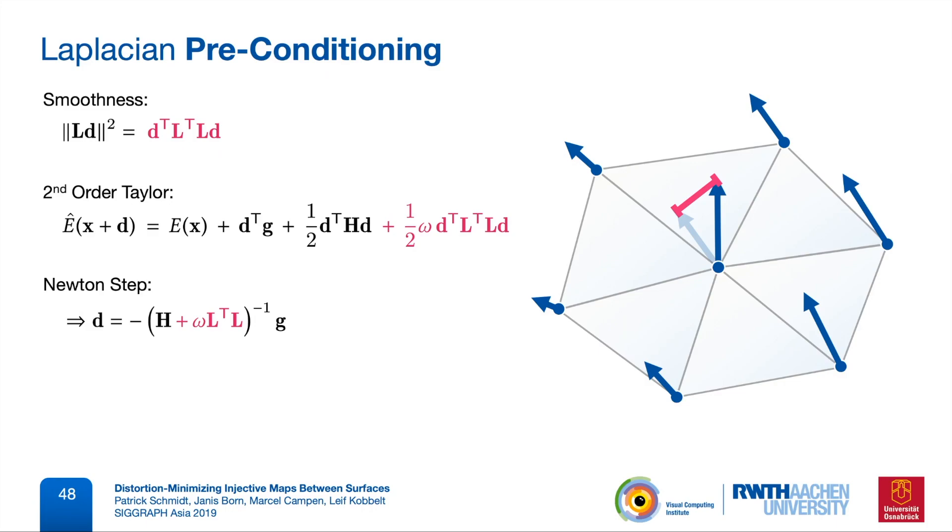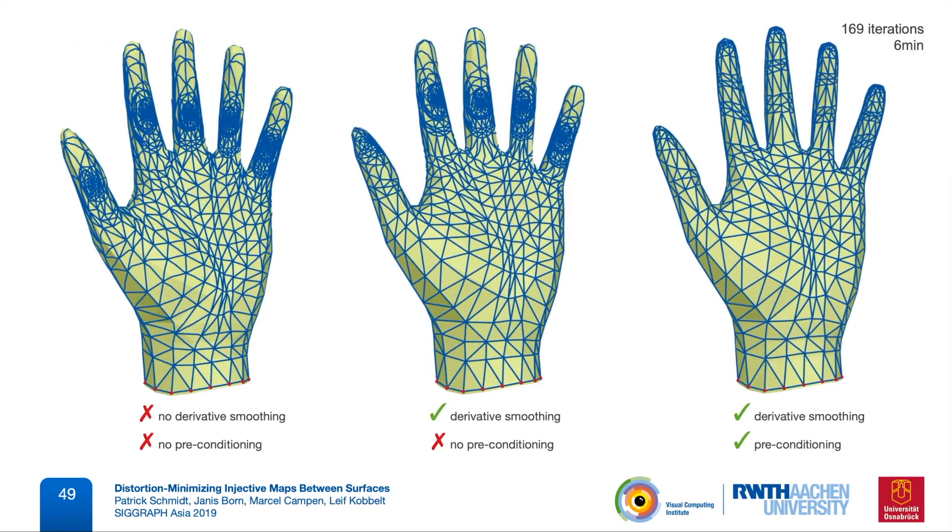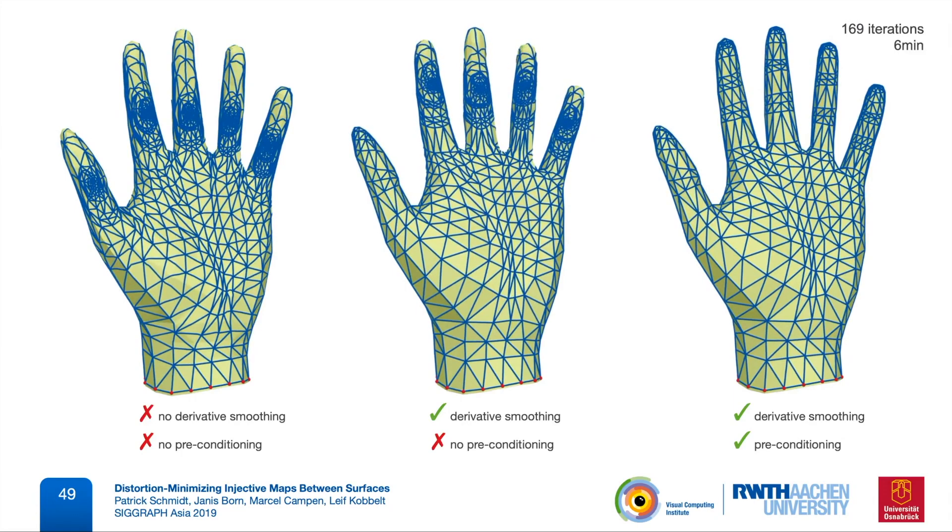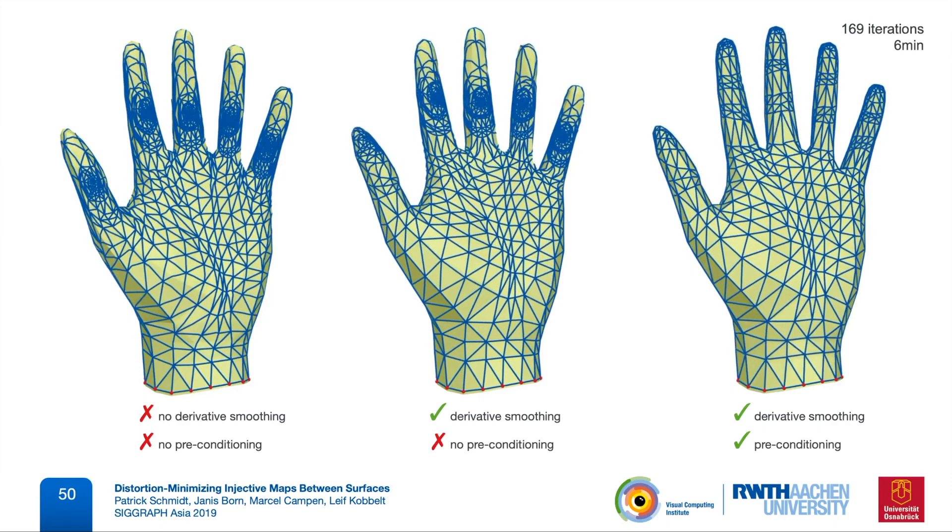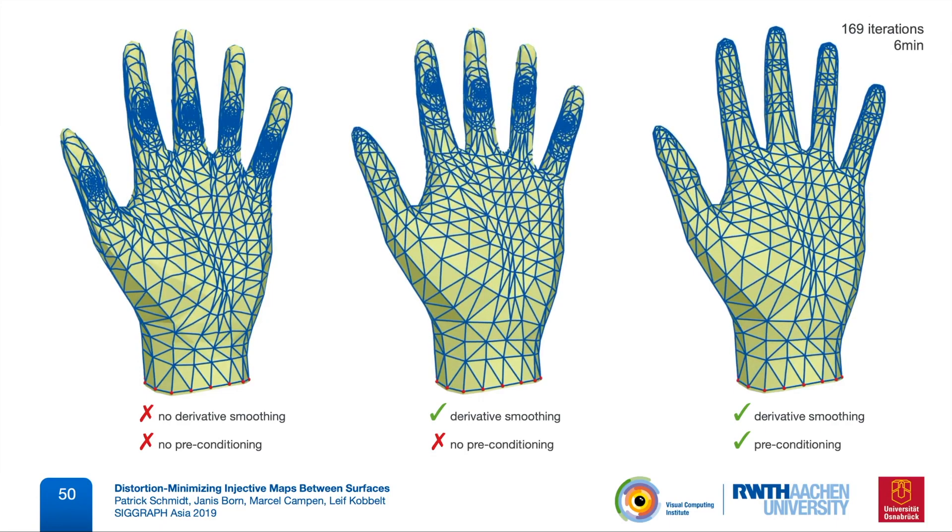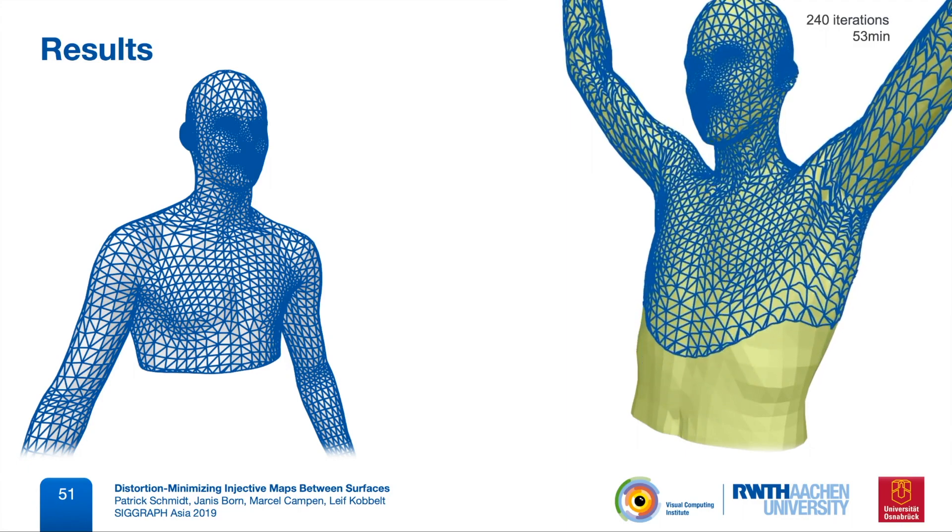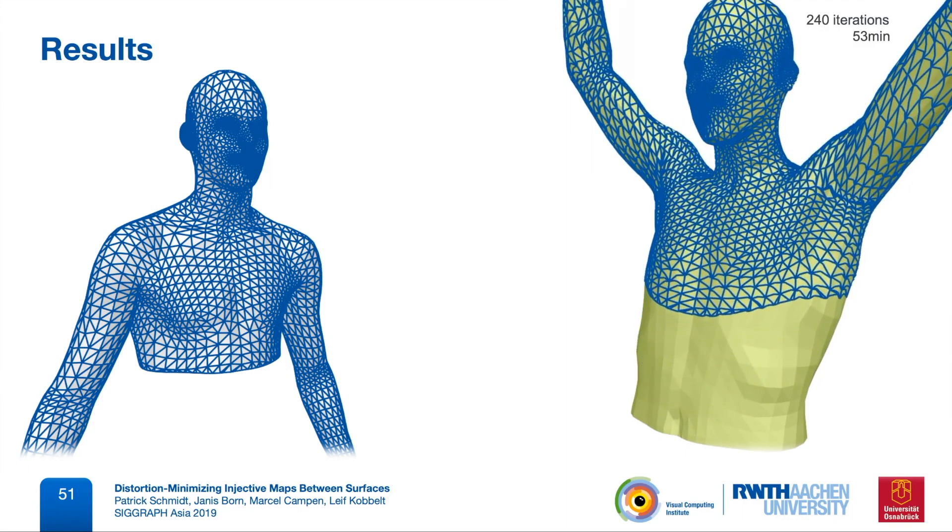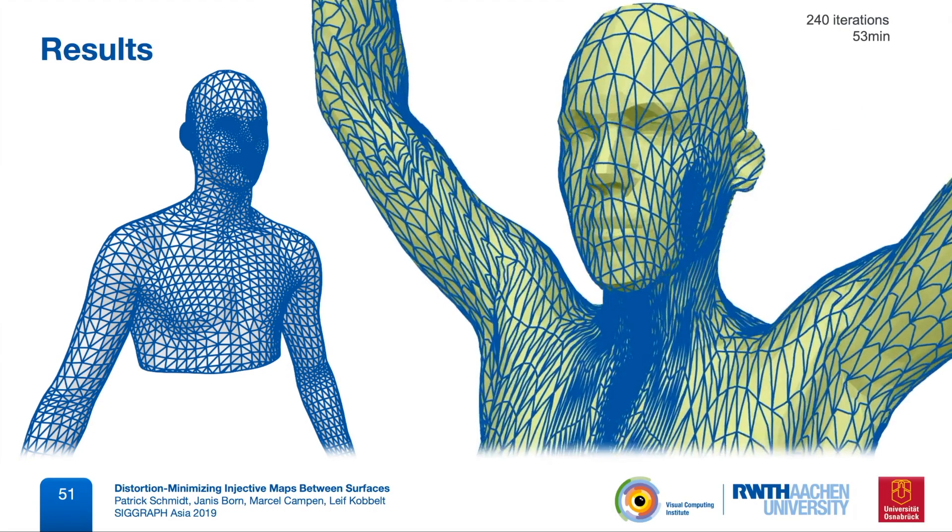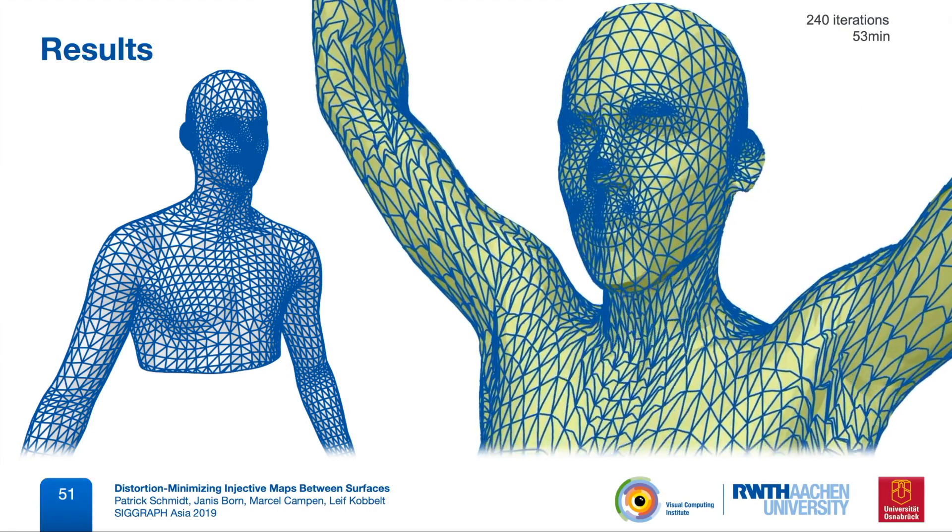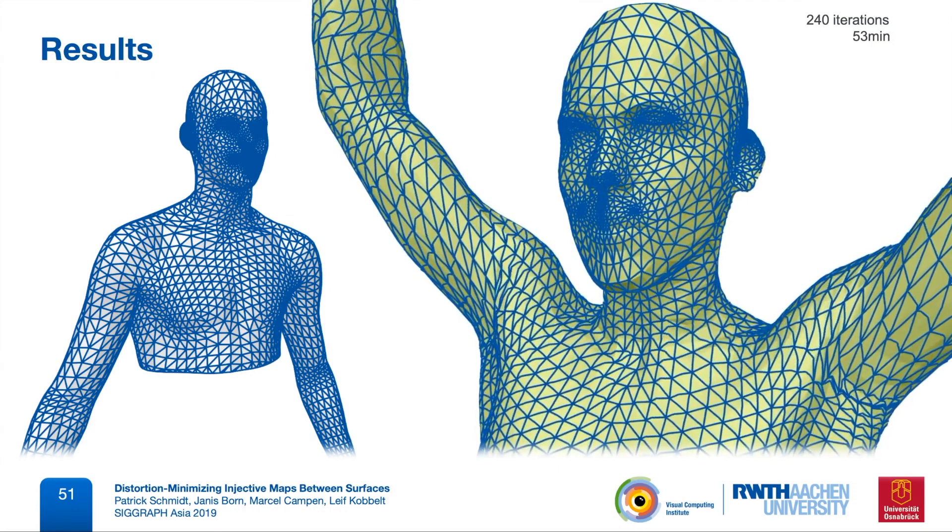Here's the same example from before with our final method on the right. Here's another example where you can really see the large scale coordinated movements that this allows. And you can also see how these movements happen first and then fine level adjustments like straightening all these little edges only happen towards the end of the optimization.